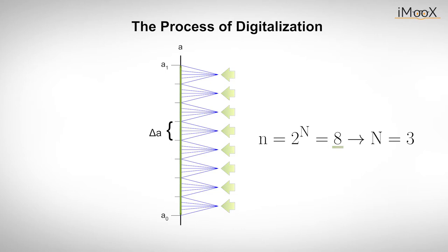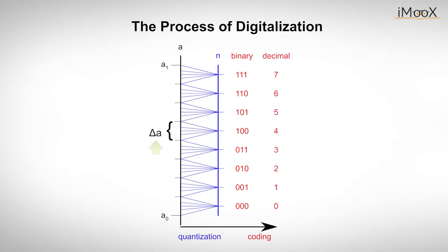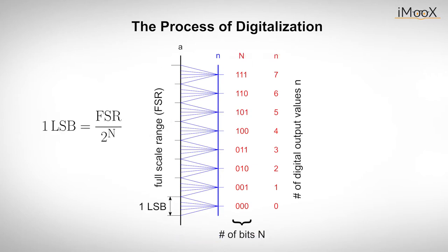These eight values give us a so-called resolution of 3-bit. In other words, the resolution defines the smallest change in the input value that the converter can still distinguish. This smallest change is called least significant bit or LSB. It is defined by the full-scale analog input range divided by 2 to the power of the number of bits.